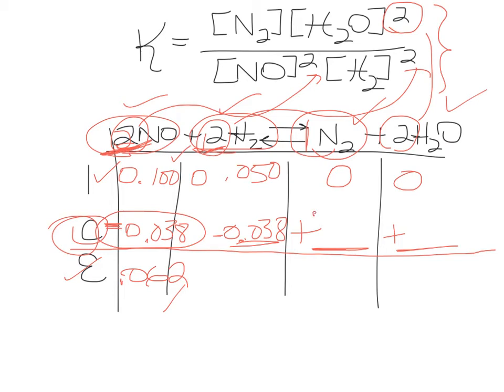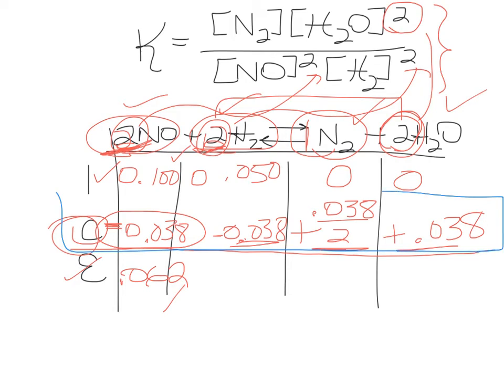So this is going to be plus, I'm just going to put 0.038 divided by 2. And there's a 2 coefficient in front of the water, which means it appears at the same rate that hydrogen and nitrogen monoxide disappear. So that is 0.038. So this change row is the most important part of the entire equilibrium table. So make sure you understand how to do that.